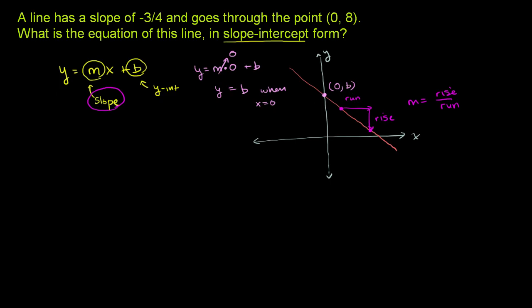Now, they tell us what the slope of this line is. They tell us a line has a slope of negative 3 fourths. So we know that our slope is negative 3 fourths.